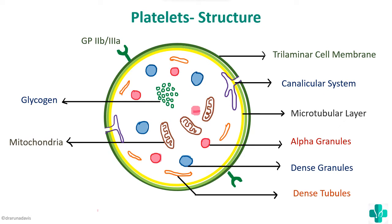On the surface there are important receptors, especially glycoprotein receptors like glycoprotein 2B3A as well as glycoprotein 1B receptors. These two are very important due to their key functions. This diagram can be drawn when the structure of platelets is asked.